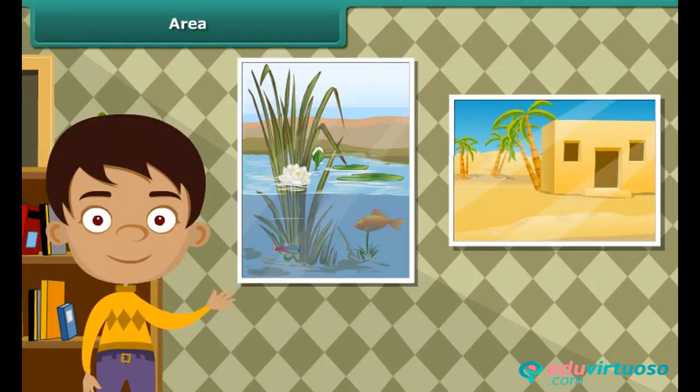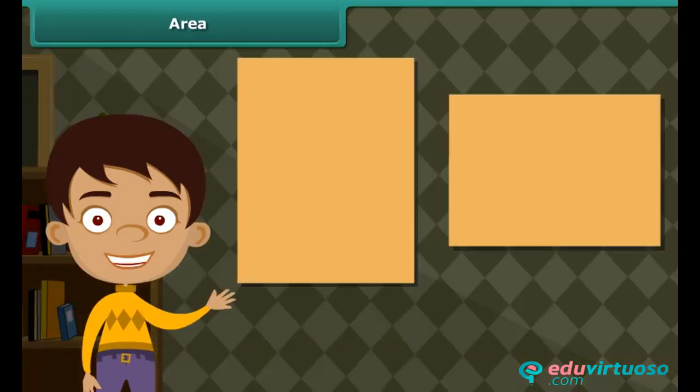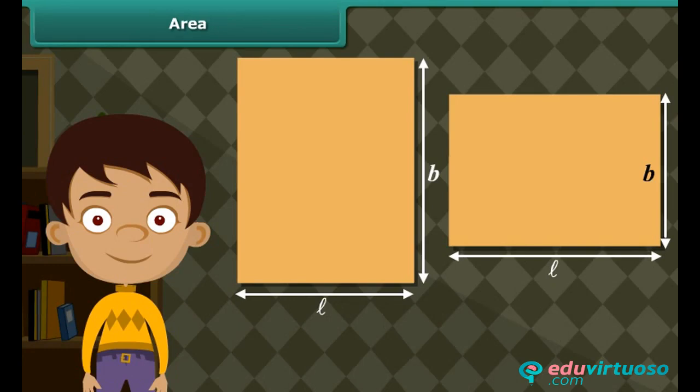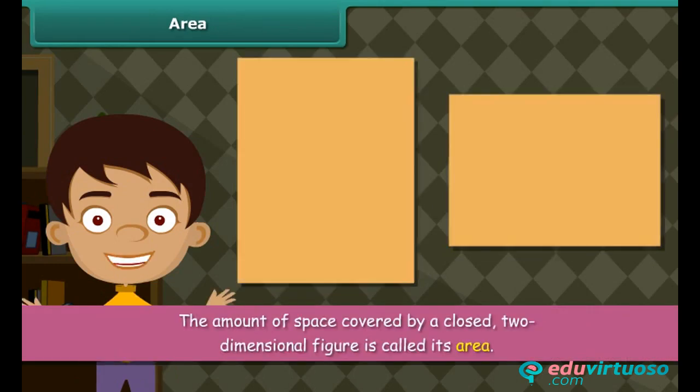Take two paintings of different sizes and compare them. The amount of space covered by the two paintings will be different. This is because the lengths and breadth of the two paintings are different. The amount of space covered by a closed, two-dimensional figure is called its area.